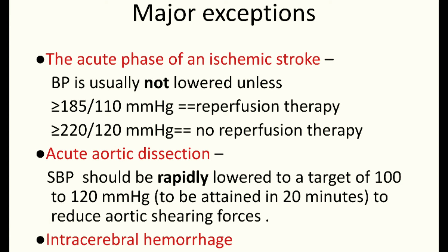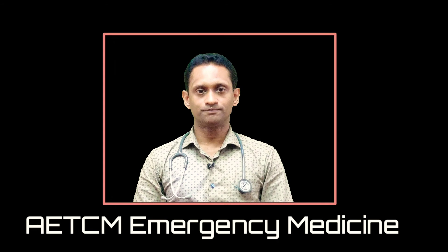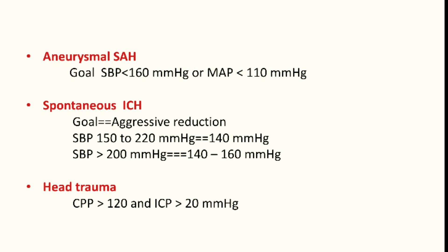The third exception is intracranial hemorrhage. In aneurysmal subarachnoid hemorrhage, the goal systolic blood pressure is less than 160 mmHg or mean arterial pressure less than 110. In spontaneous intracranial hemorrhage, aggressive reduction is indicated: if systolic is between 150 and 220, target 140 mmHg; if systolic is more than 220, target 140 to 160 mmHg.